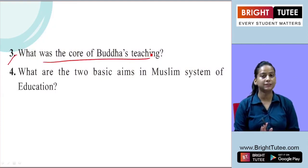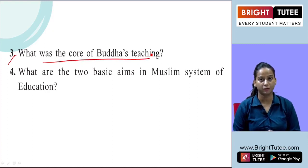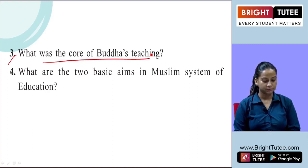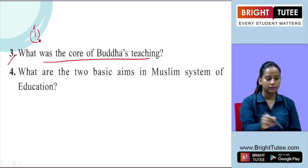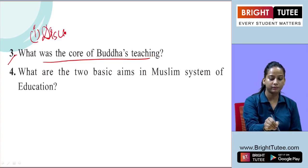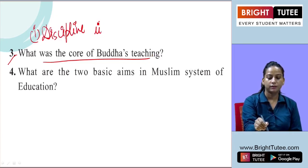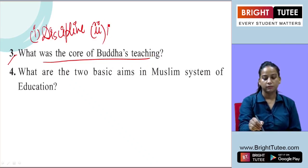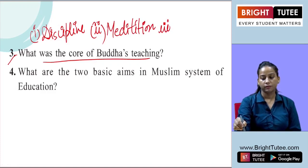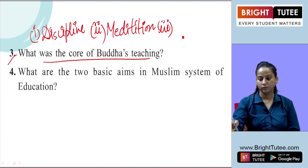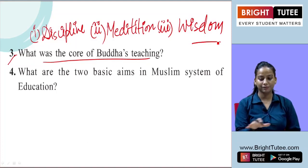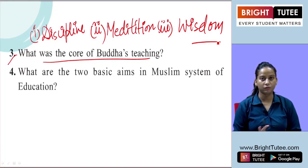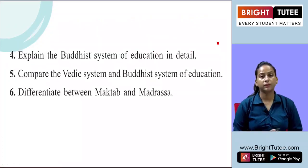The next short question asks: what was the core of Buddha's teaching? Here we have to mention the three main elements. The first one is discipline, the second one was meditation, and the third one was wisdom. These three teachings form the core of Buddha's teaching.